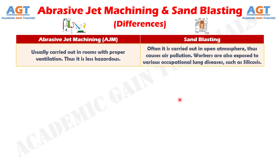And difference number 7: Abrasive jet machining is usually carried out in rooms with proper ventilation, and is thus less hazardous. Whereas sandblasting is often carried out in the open atmosphere, causing air pollution. Workers are also exposed to various occupational lung diseases, such as silicosis.